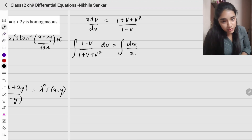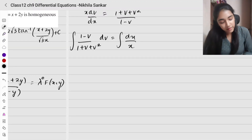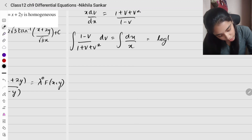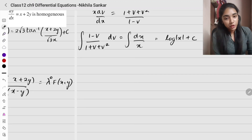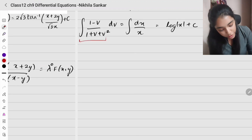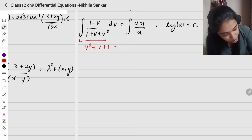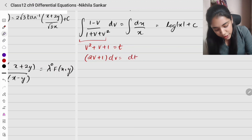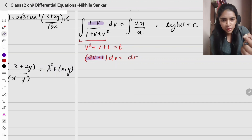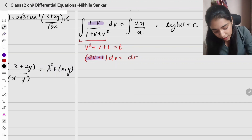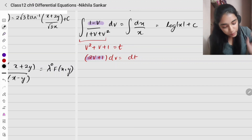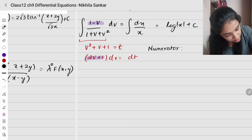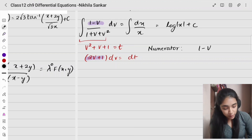Integrating both sides: the right side gives log|x| + c. For the left side, the denominator is 1 + v + v². We want to use substitution: let t = v² + v + 1, so dt = (2v + 1) dv. The numerator is 1 - v, so we need to rewrite it in terms of (2v + 1). We multiply and divide by 2, then by -1.